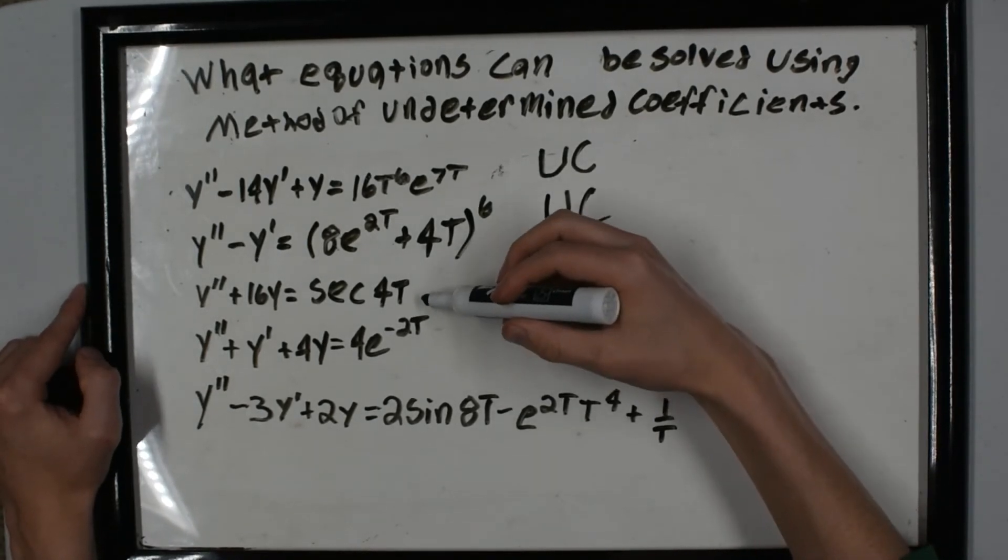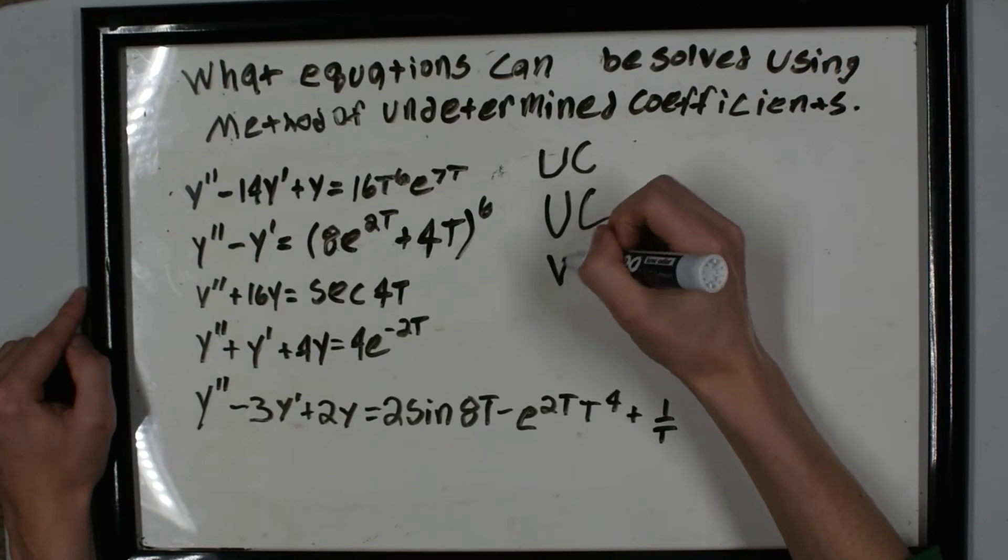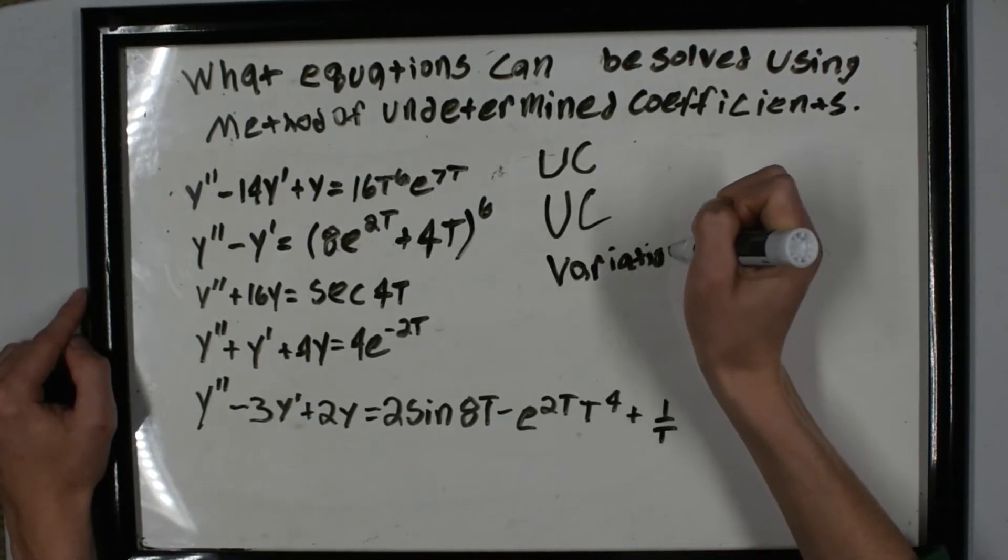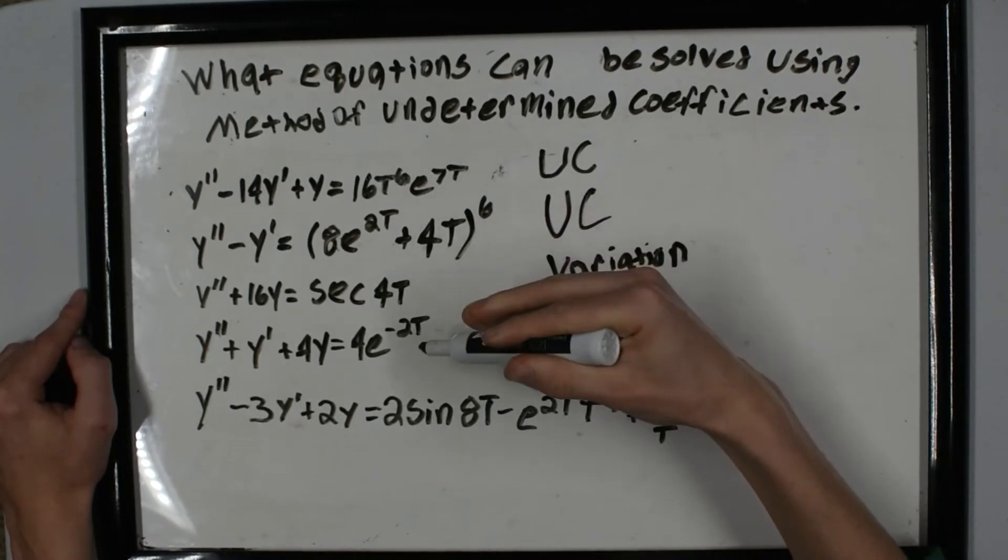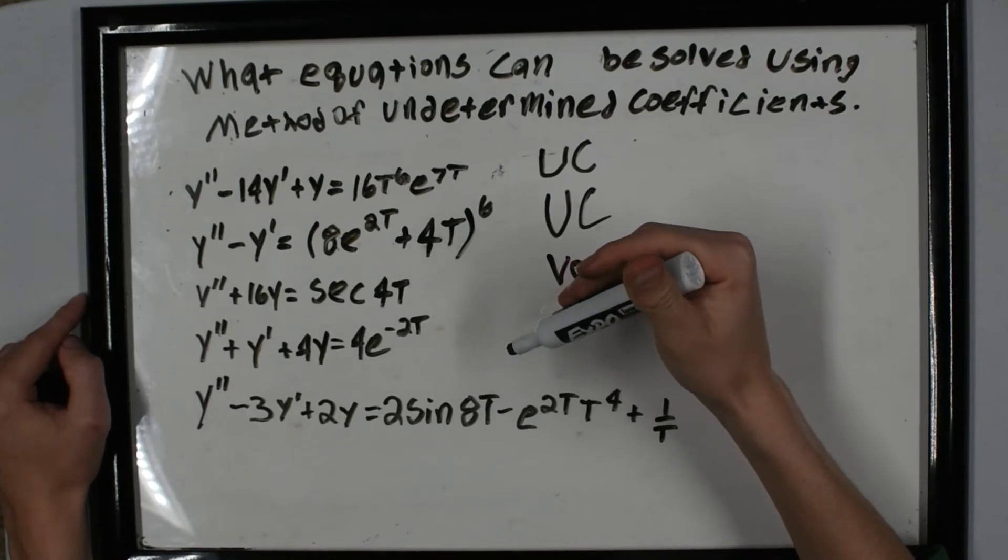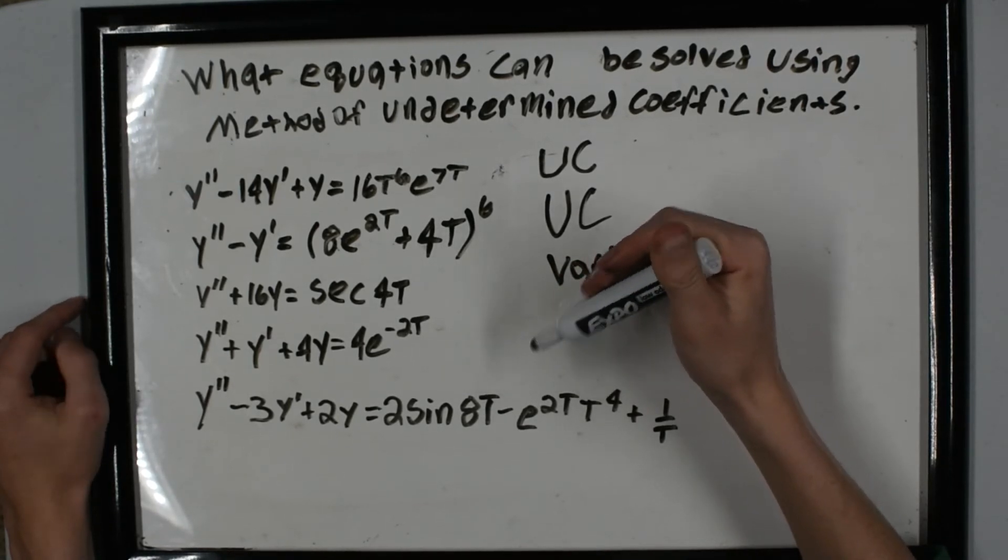Here we have a secant, and we know secant means we have to use variation of parameters. Here we have 4e^(-2t). You could use variation of parameters, but you could also use the method of undetermined coefficients.